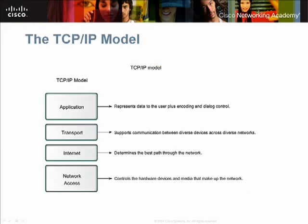As we examine the TCP/IP model, we see that it is made up of four layers: application, transport, internet, and network access. Each layer has specific responsibilities.